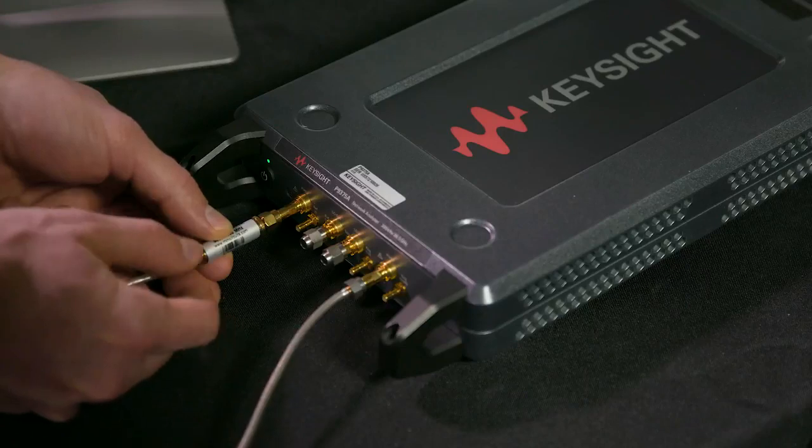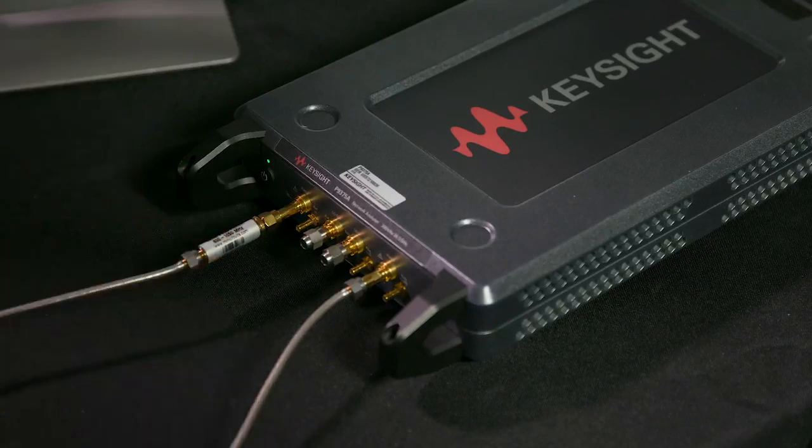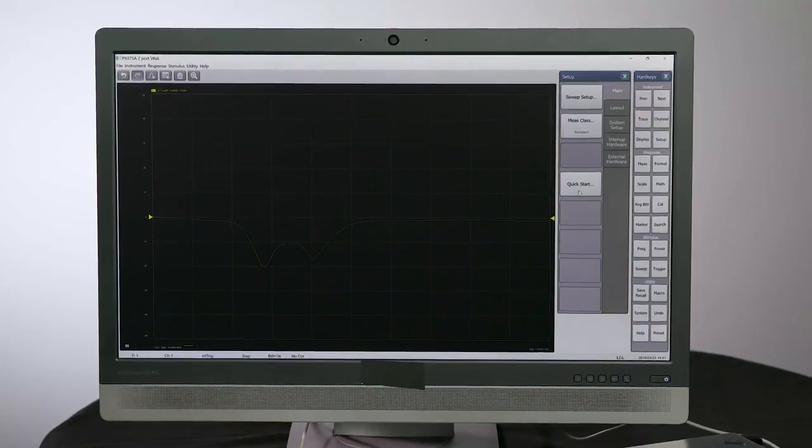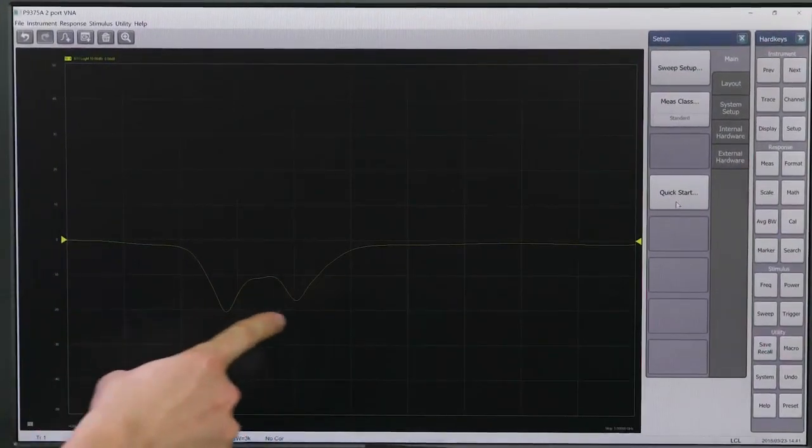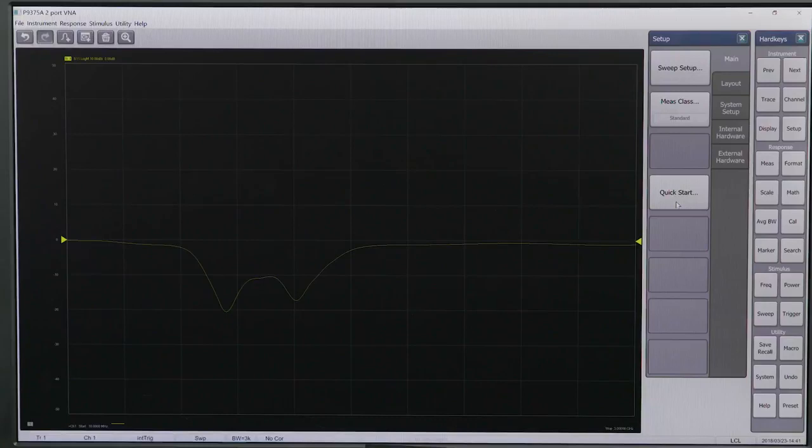Now, let's connect the DUT to port 1 and the test cable coming from port 2 and ensure we can see the signal on screen. We can see the measured S11 parameter in magnitude on the screen as the default parameter, just as we set in the quick setup.